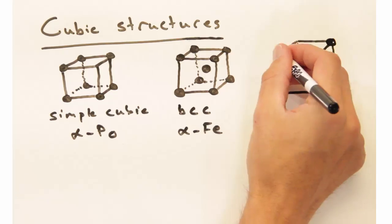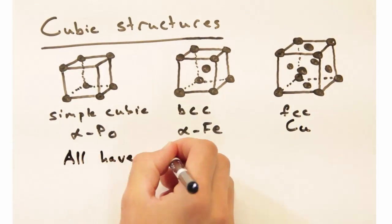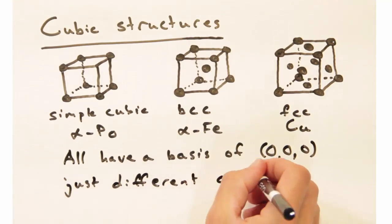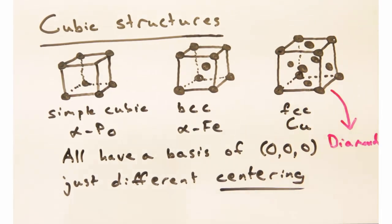These structures are similar in the sense that they're all cubic and share the same basis, one atom at zero, zero, zero. But they differ in what kind of centering they have. It's also worth talking more about the FCC structure, since it's similar to the diamond structure, which is arguably one of the most important structures in solid state.